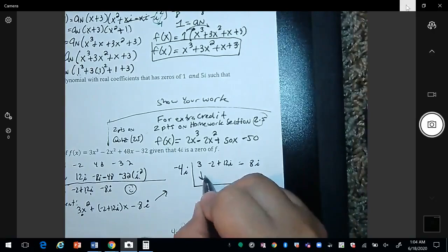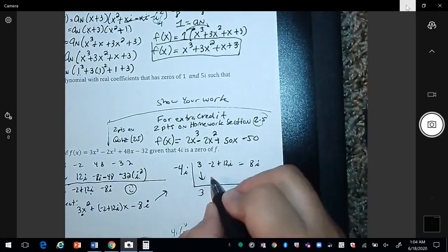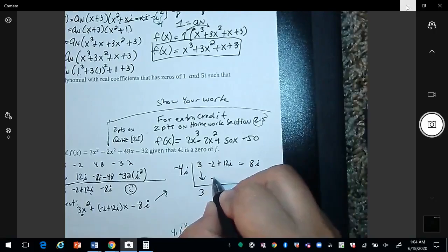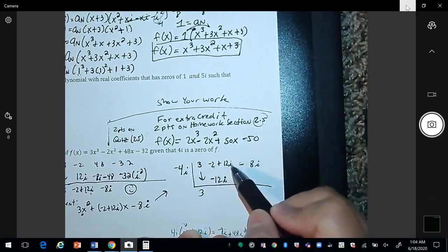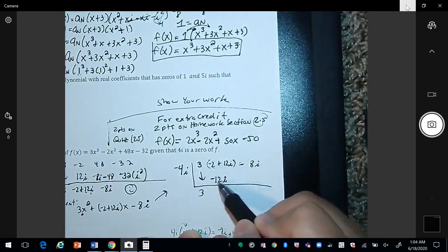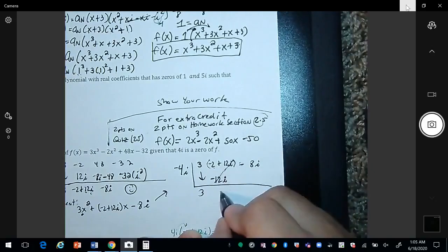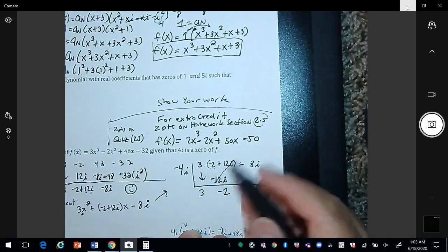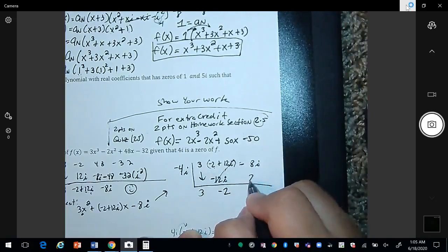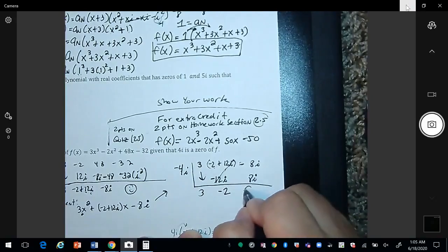Bring down the 3. 3 times negative 4i is negative 12i. So if I add negative 2 plus 12i plus negative 12i, the 12i's cancel, giving me a negative 2. Negative 4 times negative 2 is positive 8i, so that gives me a 0.